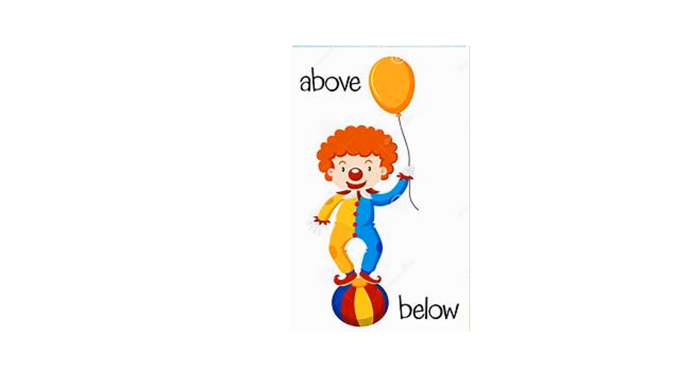Look, where is he standing? He is standing on a ball. Now, we can say that the balloon is above the joker. A-B-O-V-E. Above. The ball is below him. Below. B-E-L-O-W. Below. Above. Below.